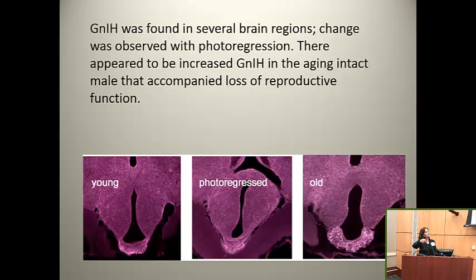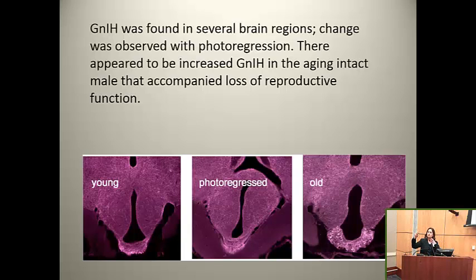In birds and some other species, there's another hormone called gonadotropin-inhibiting hormone (GnIH). In the median eminence, we see a lot more of it in old birds that are senescent. That raises the question about the interplay between different signals, because birds use GnIH to trigger photoregression as well. Are some of these signals getting crossed? What is actually regulating the system, and what are the environmental factors providing the signaling?